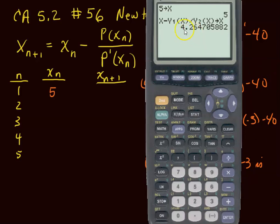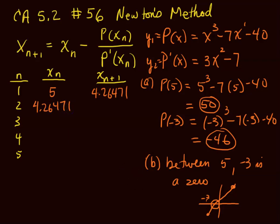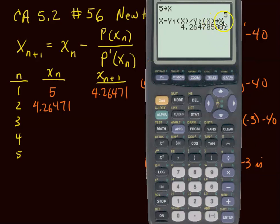So x sub 2 is 4 point, we need 4 decimal places to set, so 5 places: 4.26471. But that goes here also.